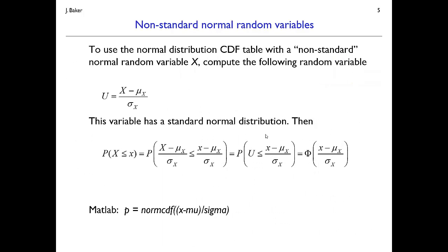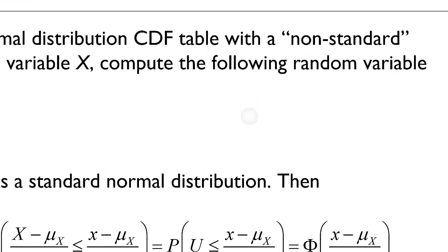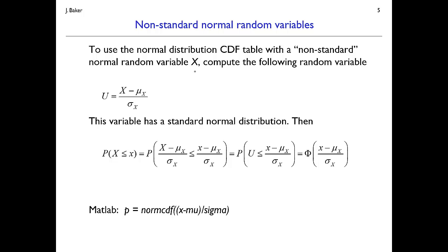That works for a standard normal random variable with mean 0 and standard deviation 1. Most of the time that's not what we're dealing with. If you have a non-standard normal random variable x, you can first standardize it: take x, subtract its mean so the result has mean 0, then divide by the standard deviation, making it have standard deviation 1. It will still be normally distributed, giving you u, which is standard normal. This allows you to compute probabilities for x pretty easily.